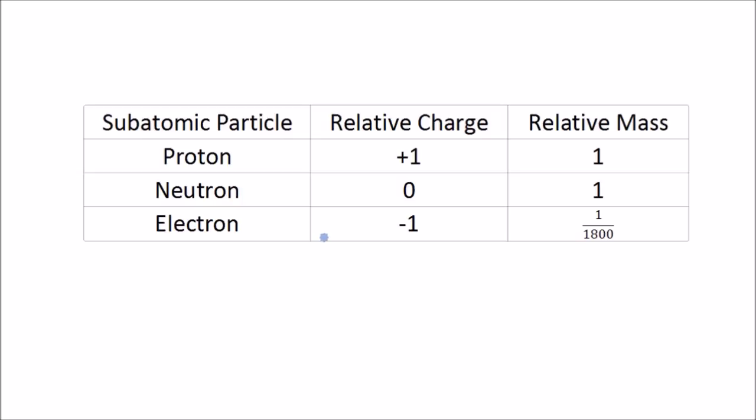We need to know a bit more about subatomic particles - their relative charges and their relative masses. If we look at each one in turn - protons, neutrons, and electrons - we see that the protons have a relative charge of plus 1, so they're positively charged. The neutrons are neutral, which means they have no charge.